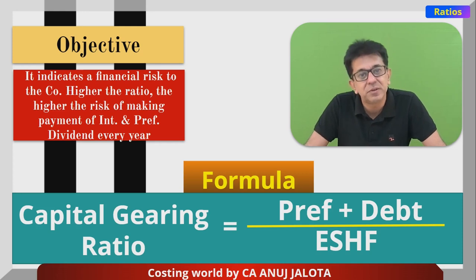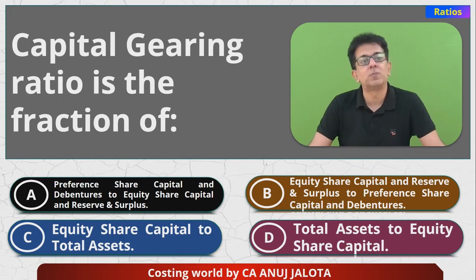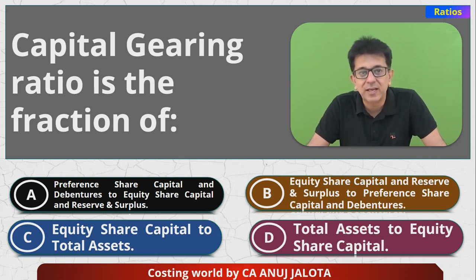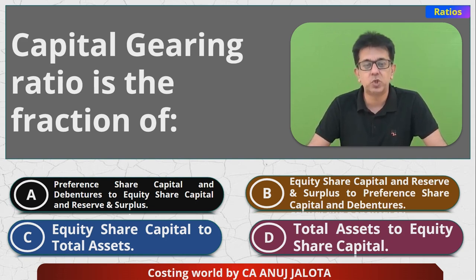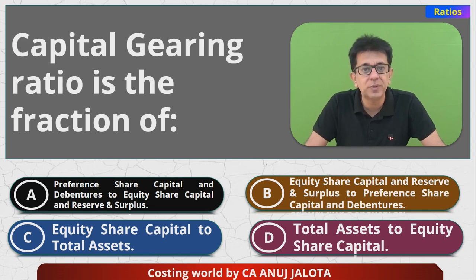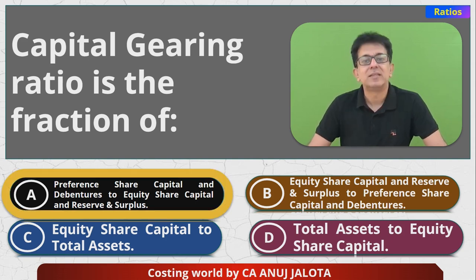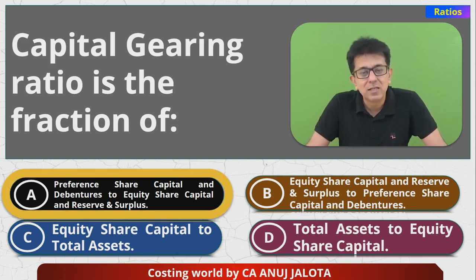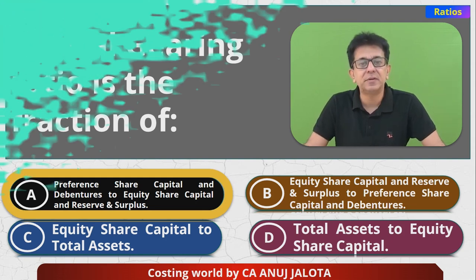If this ratio is 2:1, it means for every rupee of owner's capital you have two rupees of capital for which you have to pay something each year. Higher the ratio, higher is the risk of making payment of interest and preference dividend every year. So coming back to our question, option A makes the most sense: preference share capital and debentures to equity share capital and reserves and surplus. So A is the correct answer. See you in the next lecture, bye, take care.